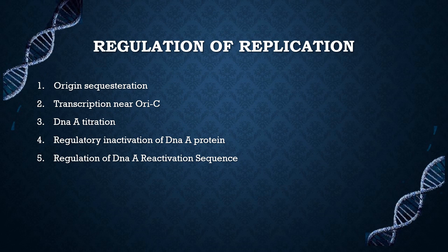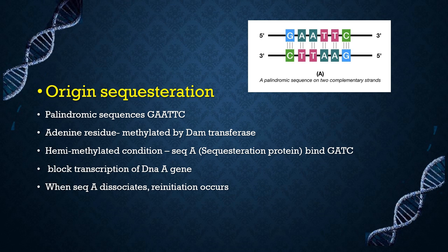Now we are dealing with regulation of DNA replication. DNA replication regulation can be explained by different methods such as origin sequestration, transcription near oriC, DnaA protein titration, regulatory inactivation of DnaA protein, and regulation by DARS. In origin sequestration, at the origin there are distributed repeats of palindromic sequences. In molecular biology, palindromic sequences are sequences where one strand is the same as the complementary sequence on the other strand when read from 5' to 3'.